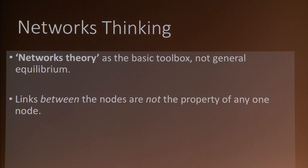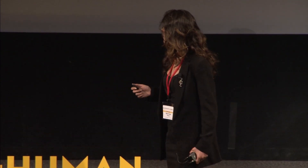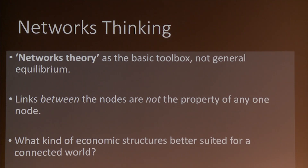Think of it from a complex systems perspective, like the financial crisis. You do something that is the right thing to do at the micro level, but if everyone does it — if everyone pulls money out of the market — then the market crashes. That is a classic example of emergent properties at the system level. So the question I want to leave you with is: what kind of economic structures are better suited for this world? That is the brainstorming we have the opportunity to do today.